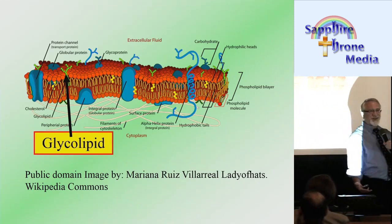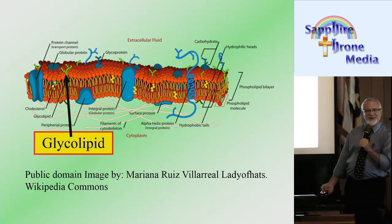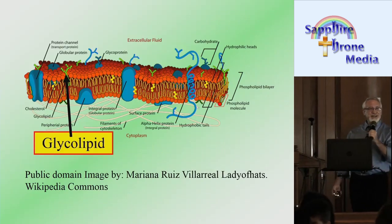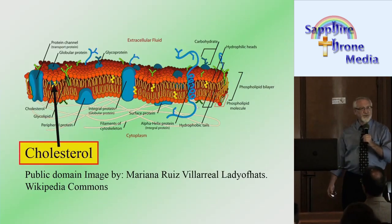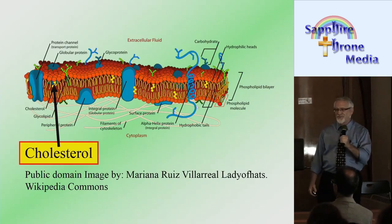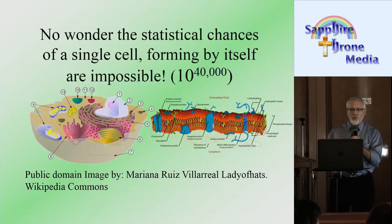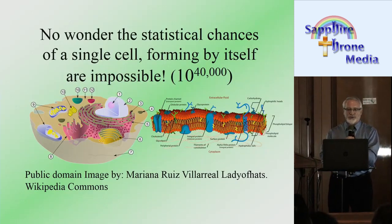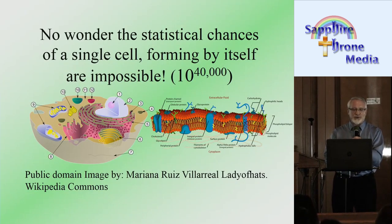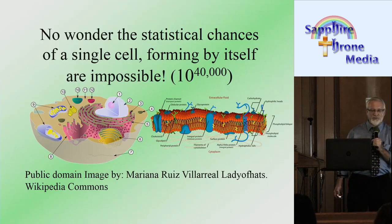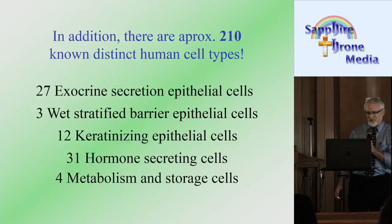That's just the case that holds it all together — look at how intricate it is. No wonder the statistical chances of a single cell forming by itself are set at 10 to the power of 40,000.